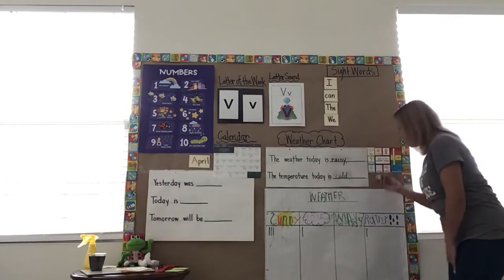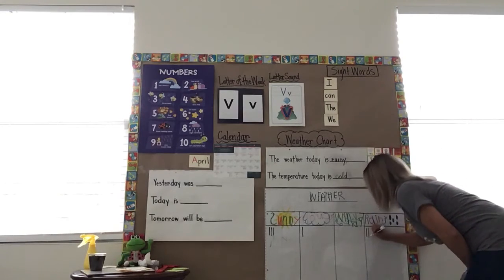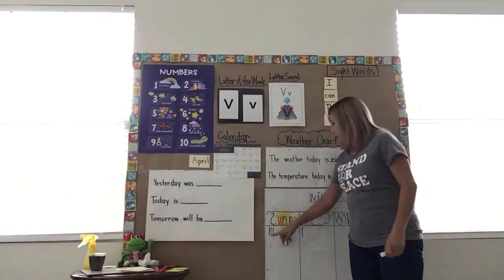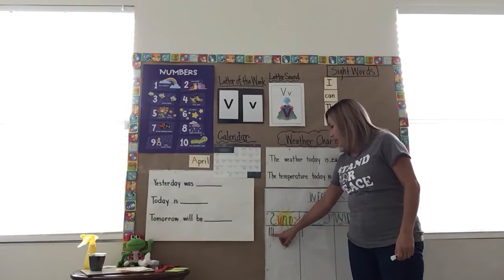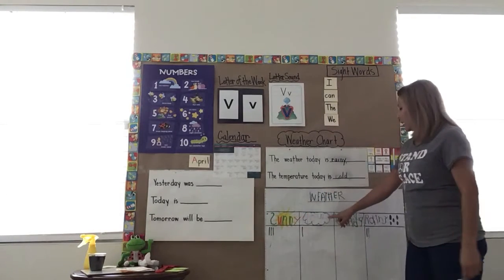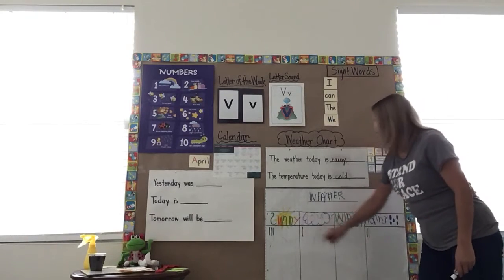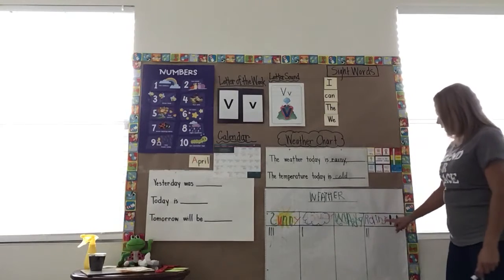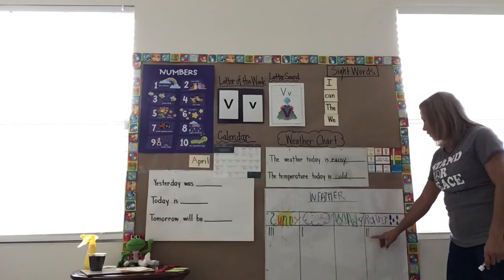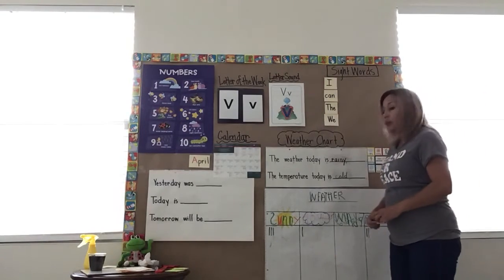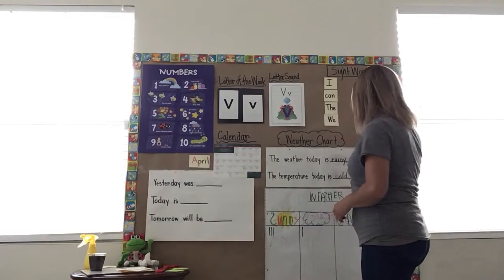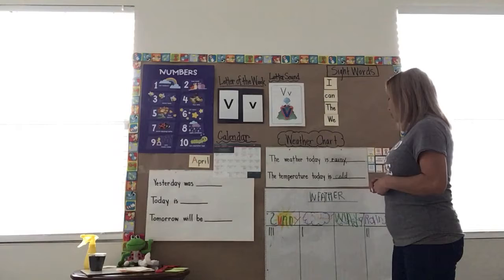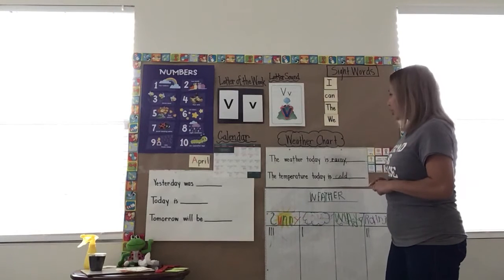Because today is another rainy day. So now we know: sunny has three tally marks — one, two, three. Cloudy has one. Windy has none — zero. And rainy has two — one, two. So we'll see what the weather is tomorrow. Maybe rainy will catch up to sunny, or maybe sunny will get ahead. We'll check our tally marks for that.